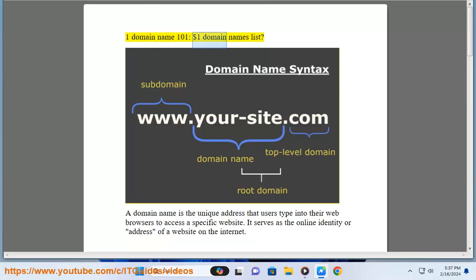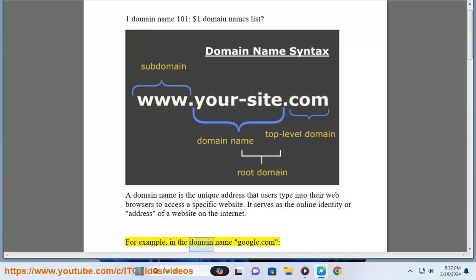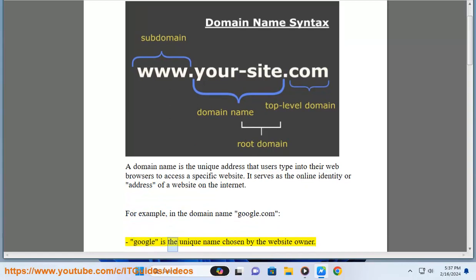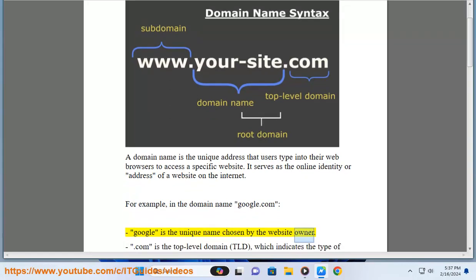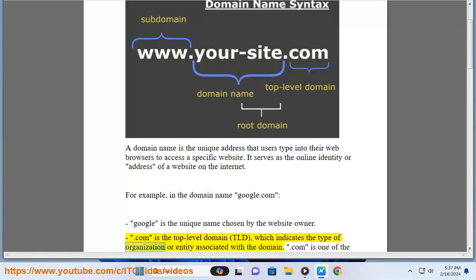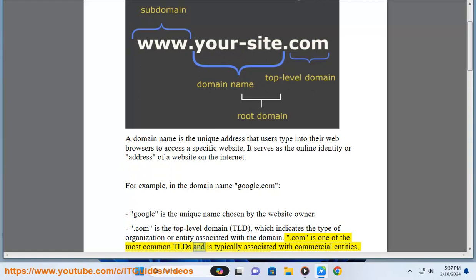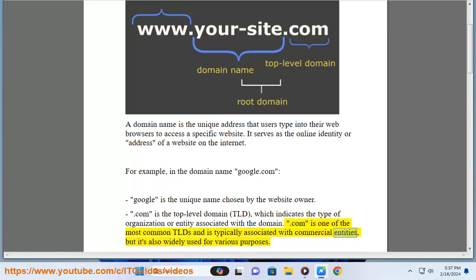Domain Name 101. A domain name is the unique address that users type into their web browsers to access a specific website. It serves as the online identity or address of a website on the internet. For example, in the domain name google.com, Google is the unique name chosen by the website owner. .com is the top level domain (TLD), which indicates the type of organization or entity associated with the domain. .com is one of the most common TLDs and is typically associated with commercial entities, but it's also widely used for various purposes.